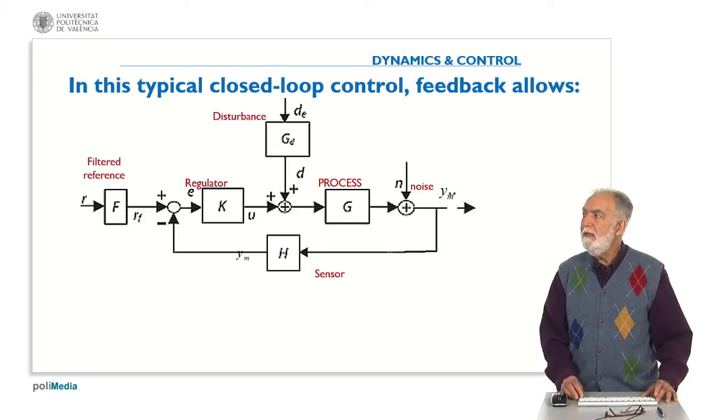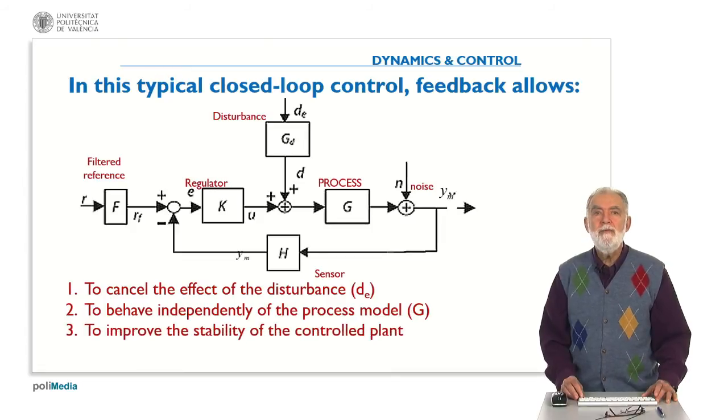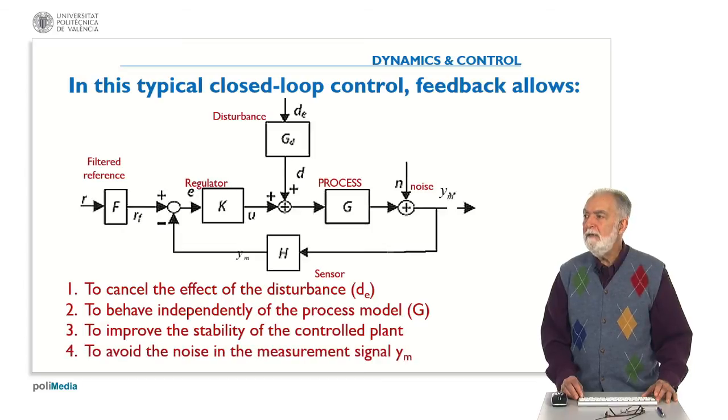So feedback allows to cancel the effect of the disturbance, to behave independently of the process model, to improve the stability of the control plant, or to avoid the noise in the measurement signal YM.